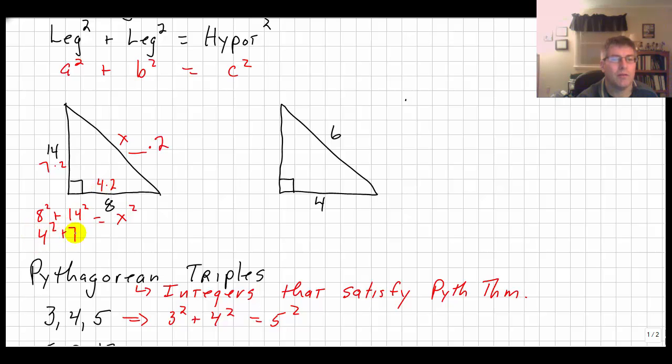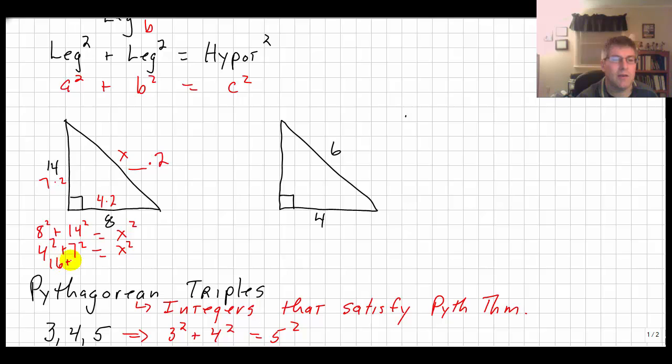We can say 4 squared plus 7 squared equals x squared and that is 16 plus 49 equals x squared. 16 plus 49 is 65. So 65 equals x squared, but we don't want x squared, we want x. The square root of 65 is equal to x.